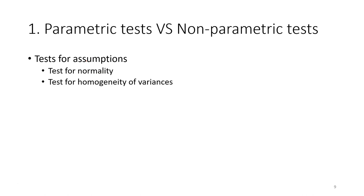From the beginning of research, we define our research questions, design our experiment to collect data, then organize and summarize the data before performing statistical tests. All steps before statistical analysis are the same. We only decide whether to use parametric or non-parametric tests after collecting the data. Before choosing a test, we need to check whether the data is normally distributed and whether the variance is equal.